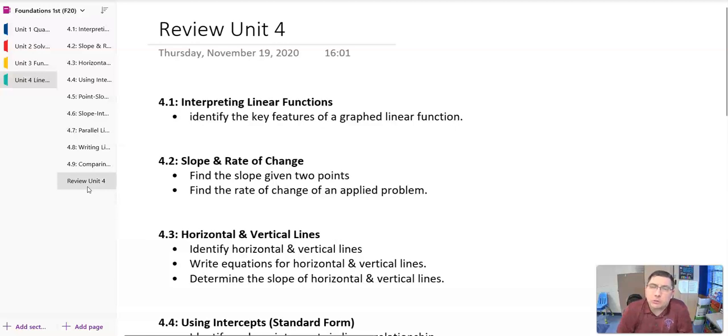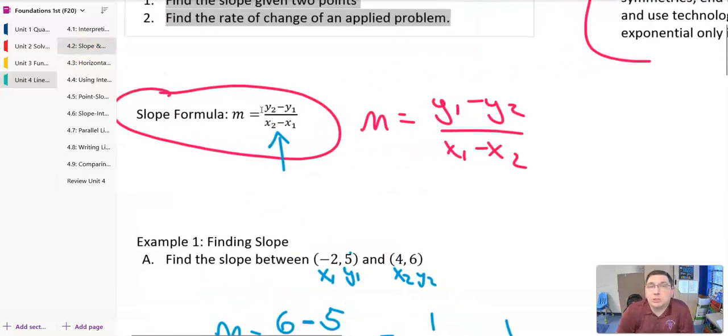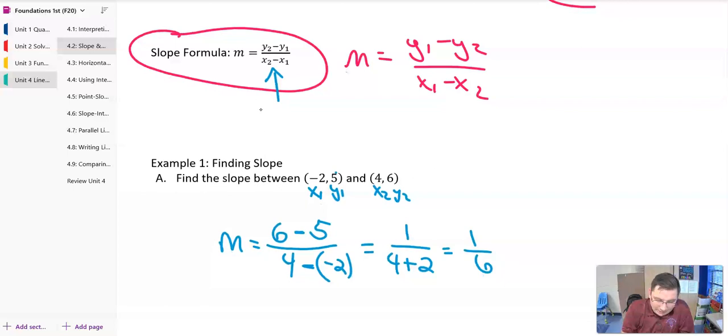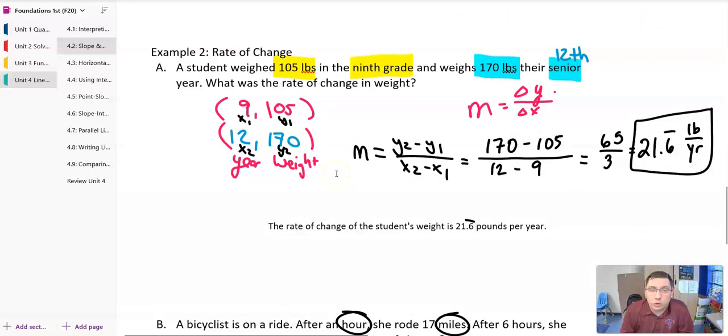In 4.2, we talk about slope and rate of change. And remember that we're going to be able to find the slope given two points and find the rate of change of an applied problem. And so remember that slope, our slope formula, M equals y-sub-2 minus y-sub-1 over x-sub-2 minus x-sub-1. We will list our order pairs, write them out, x-sub-1, y-sub-1, x-sub-2, y-sub-2, and find our slope.